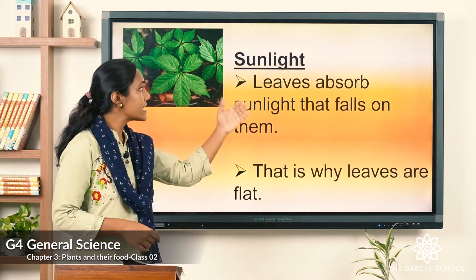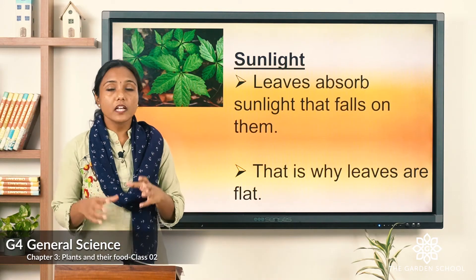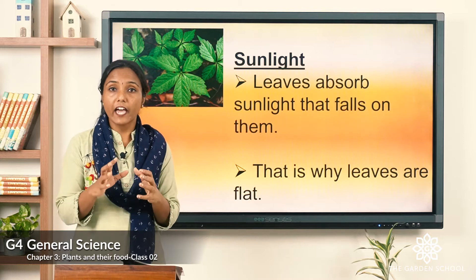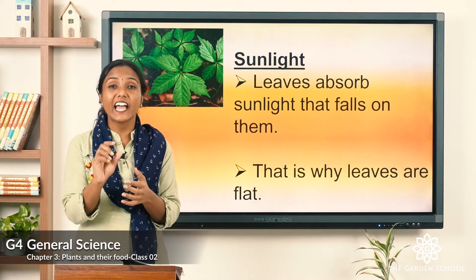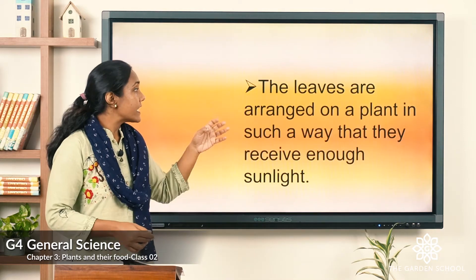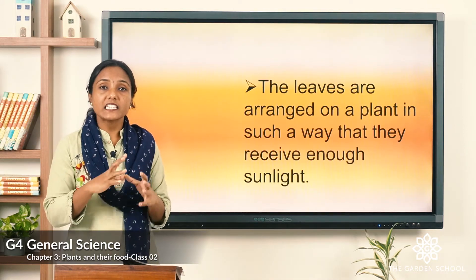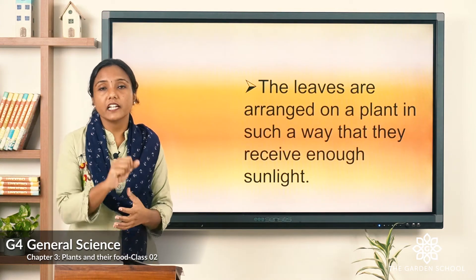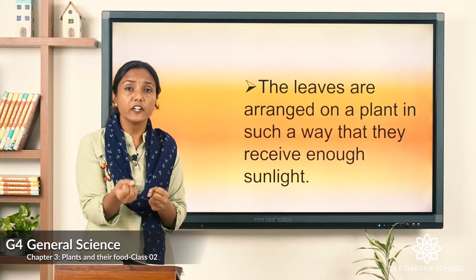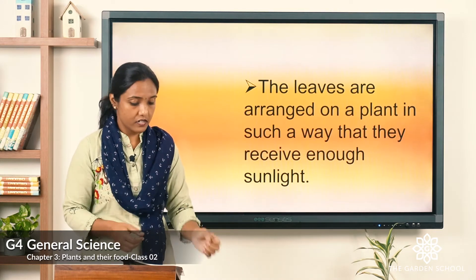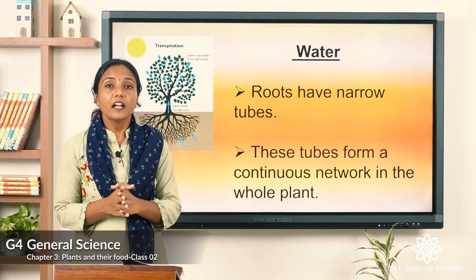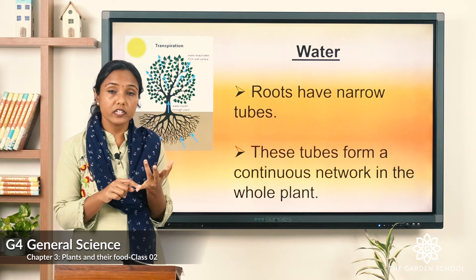The first thing is sunlight. Leaves absorb sunlight which falls on them. That is why leaves are flat and very thin — to absorb the sunlight they receive. The leaves are arranged on a plant in such a way that they receive enough sunlight, so whatever sunlight is required, the leaves absorb it.